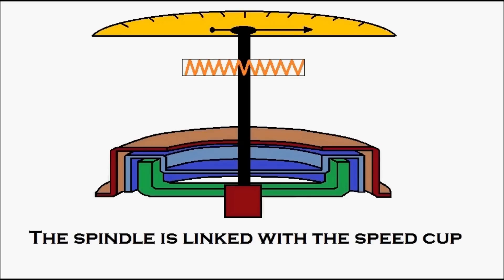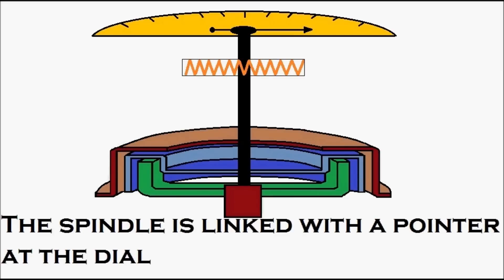The spindle is linked with the speed cup, which is in blue. This can be clearly seen. The spindle is linked with a pointer or needle at the dial.